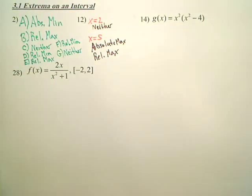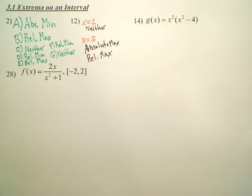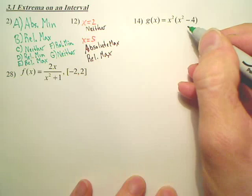Number 14 is asking you to find critical numbers. So if I want to find critical numbers for 14, what I'm going to do is derive it and set it equal to zero.